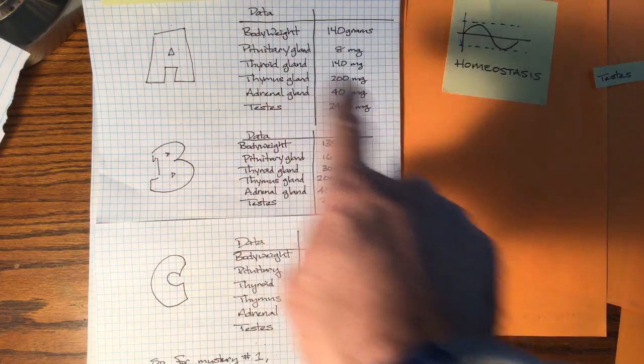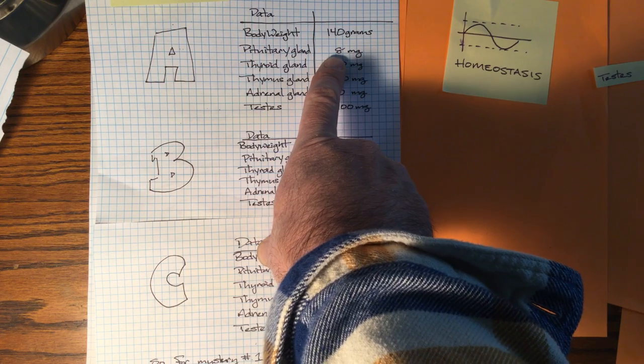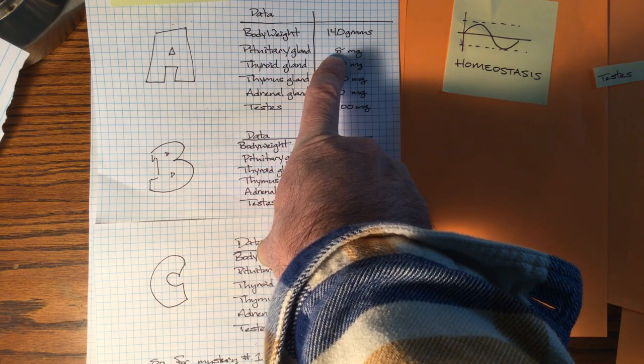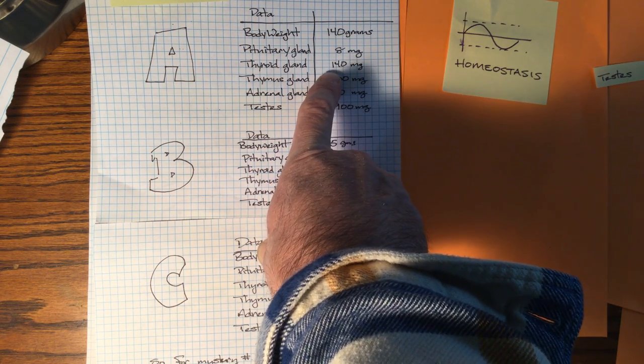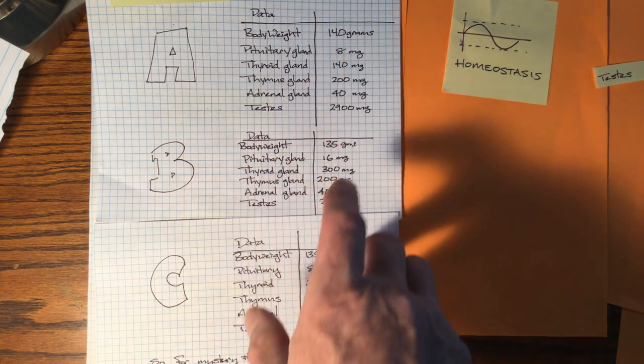Notice in rat A, his pituitary shrank. And his thyroid gland, normally 250 milligrams, dropped down to 140 milligrams.